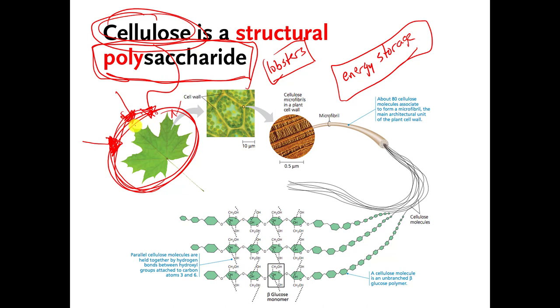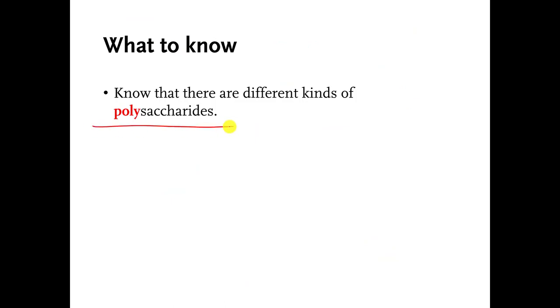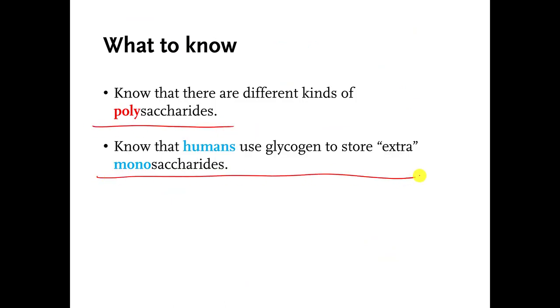And that's all I really want you to know. Polysaccharides can be used for energy storage. They can be used as kind of tough structures in living things as well. You should know that there are different kinds of polysaccharides. You should know that we humans use glycogen as a polysaccharide. And that's it. So that's it for this week's videos. Bye-bye.